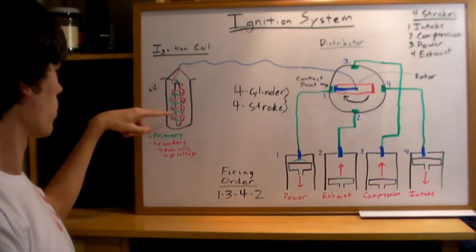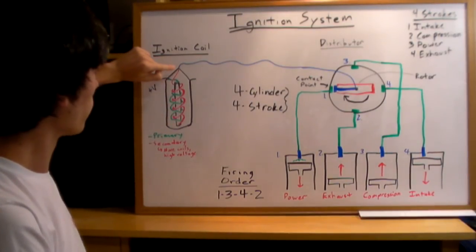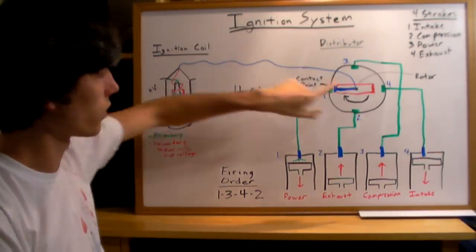It's going to pass that current to a secondary coil. The secondary coil is going to have more coils and it's going to be at a higher voltage. Then it's going to send this higher voltage from the ignition coil to the distributor.